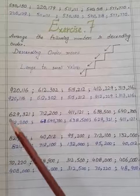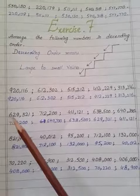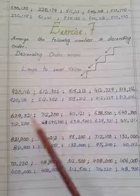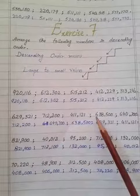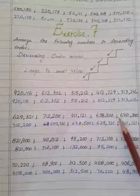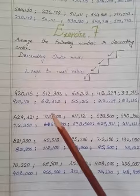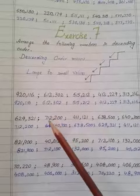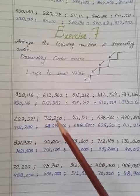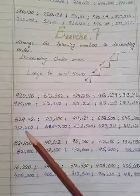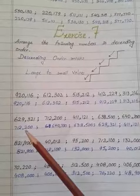First, you compare the largest place value. Looking at the hundred thousands place: 6, 7, 4, 6, 6. The highest is 7, which means 712,200 is the largest. You write this number first.